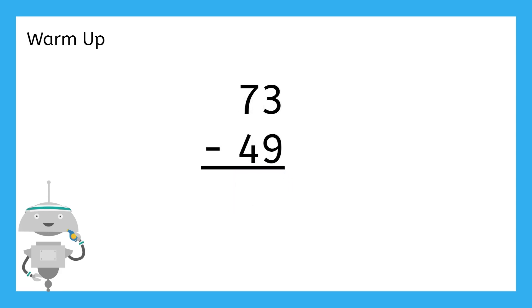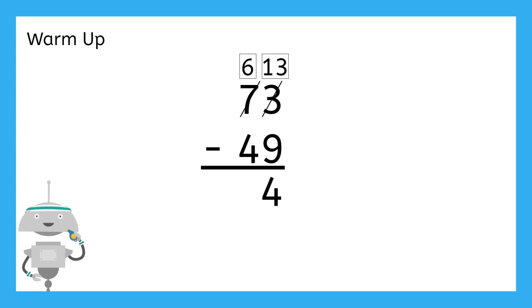For the problem 73 minus 49, we have three ones but need to subtract 9. In subtraction, we regroup when the amount being subtracted is more than what's available. By regrouping one of our 10s as 10 ones, we'll have six 10s instead of 7, and 13 ones instead of 3. 13 minus 9 equals 4, and 6 minus 4 equals 2, for a difference of 24.